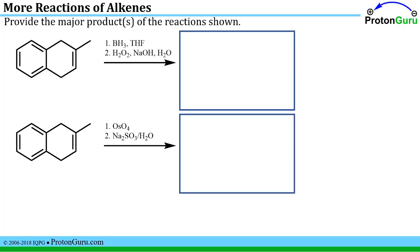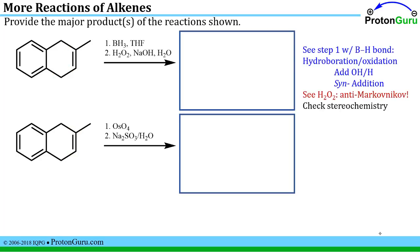Our first question asks us to provide major products for these reactions. We look at the reaction conditions and try to figure out what type of reaction we have. One point is that the benzene rings, or arenes, do not react like a regular alkene, so we're really trying to do reactions of these particular double bond carbons in these two cases.